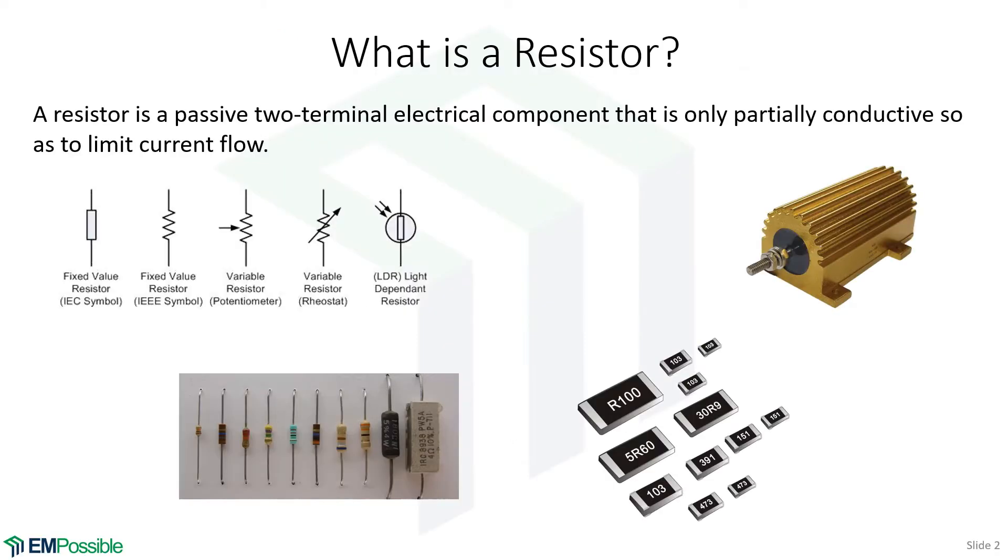Analyzing resistors. So first, what is a resistor? Well, it's a two-terminal electrical component, has two wires coming out of it, and it's partially conductive, and it does that to limit the current that flows through it.